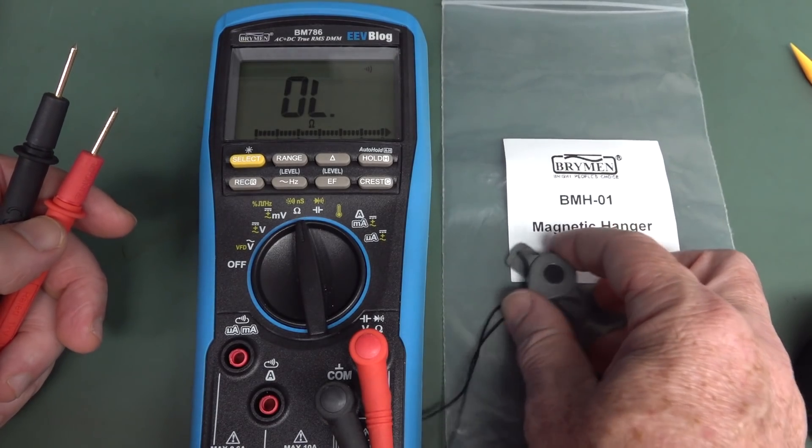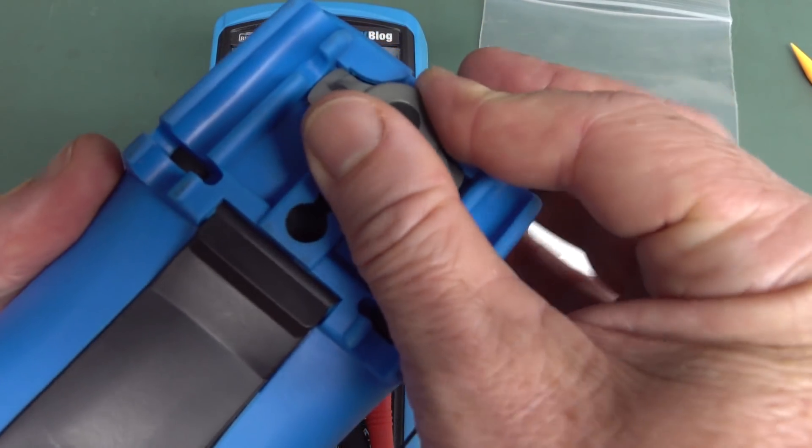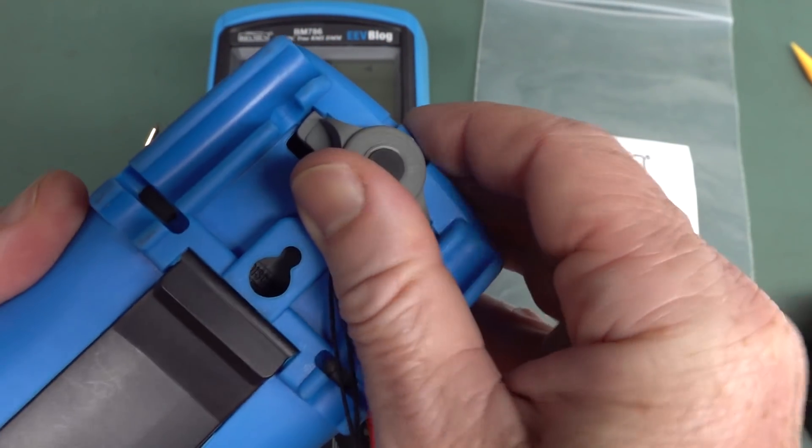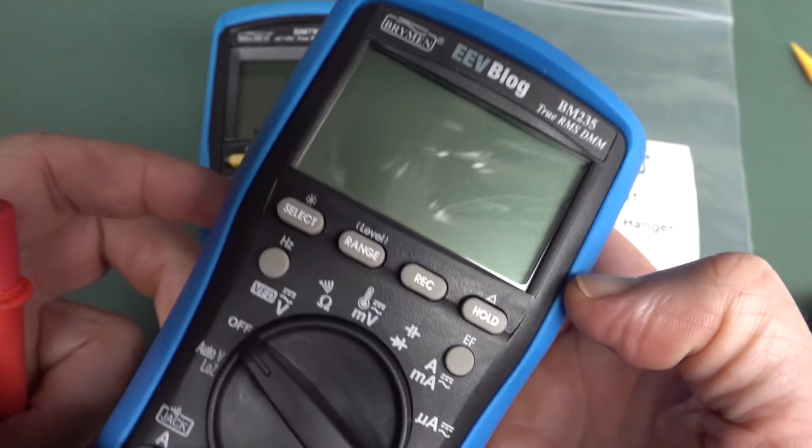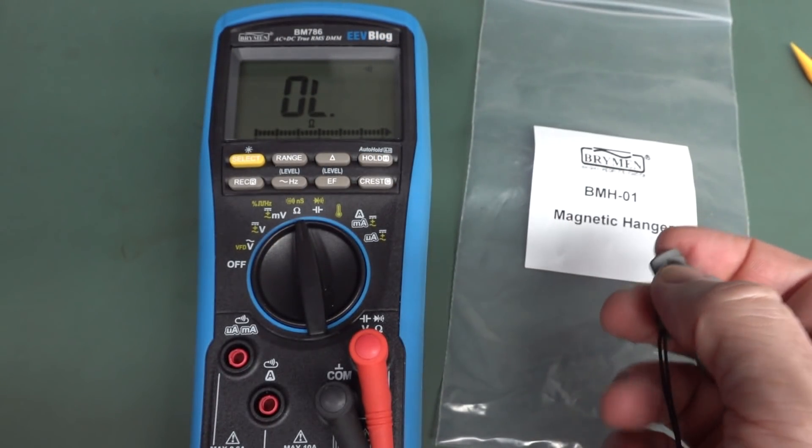I actually don't have one for the BM786 yet, but what I do have is the original one from the BM235, and it's designed to slot into the back of the meter case like that, and then of course you can hang that on a metal shelf or cabinet or whatever it is you're doing work on.